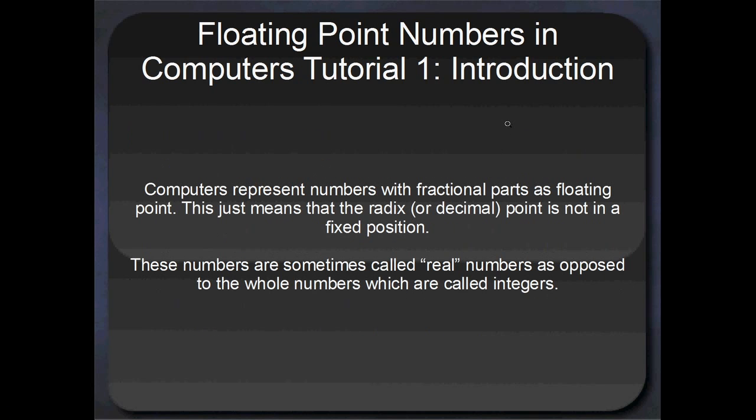Basically computers represent numbers with fractional parts as floating point, and this just means that the decimal point or radix point can move up and down in a number, as opposed to a fixed point system where the decimal will be in a particular place. These numbers are sometimes called real numbers as opposed to whole numbers, which are called integers.